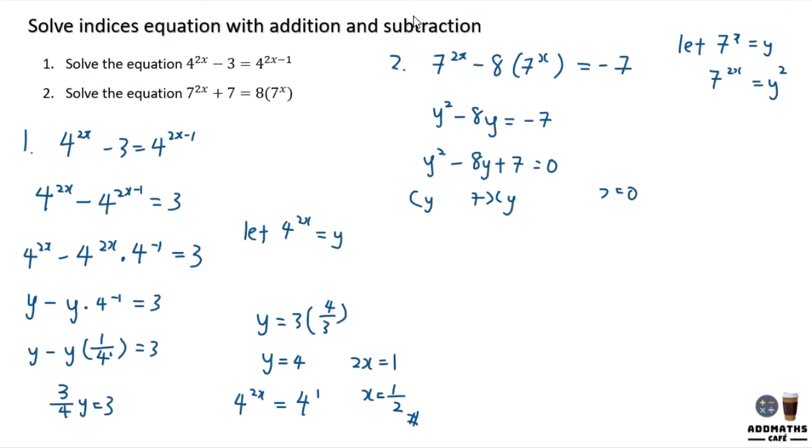(y - 7)(y - 1) = 0. Minus and minus give you a positive. So y = 7 or y = 1.